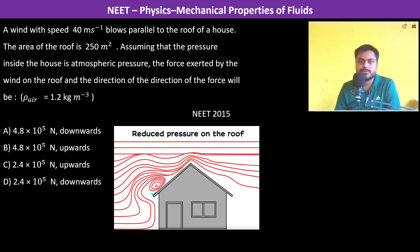A wind with speed 40 meters per second blows parallel to the roof of a house. You can see in the diagram it is almost parallel only. Assuming that the pressure inside the house is atmospheric pressure, the force exerted by the wind on the roof and the direction of the force will be?